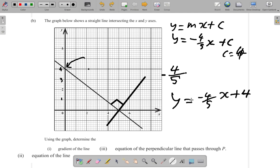If you remember that when two lines are perpendicular, their gradients multiply to give negative 1.